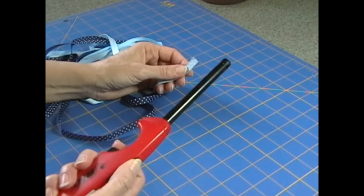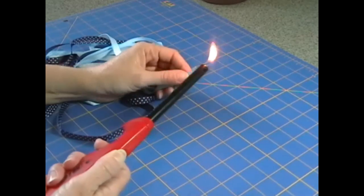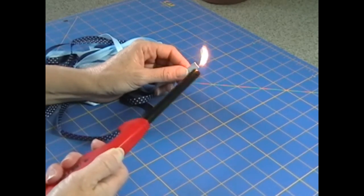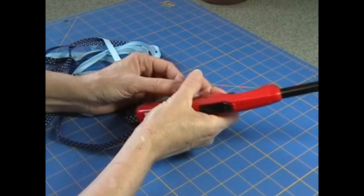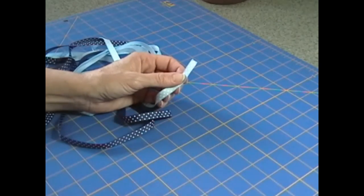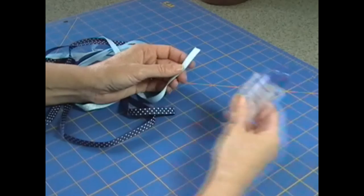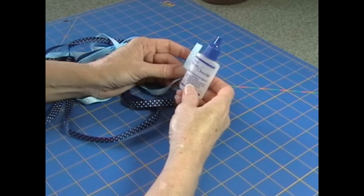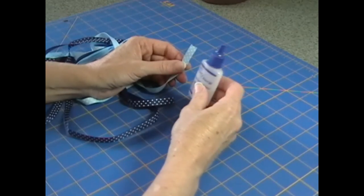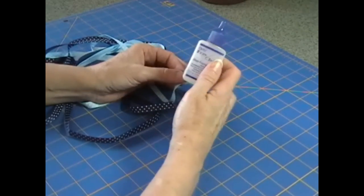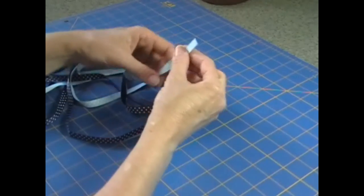So the easiest way to do that is to use a lighter and really just quickly run the lighter across the end of the ribbon. You can see that it beads up a little and melts and now it's not going to be able to fray. If you don't want to use a lighter you can also use a fray check type product and just run some of the liquid across the edges. You'll actually have to wait for that to dry if you use the fray check, so keep that in mind.